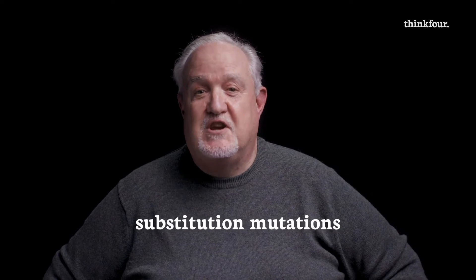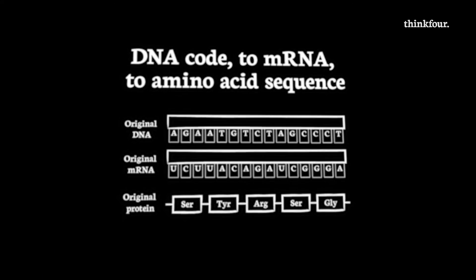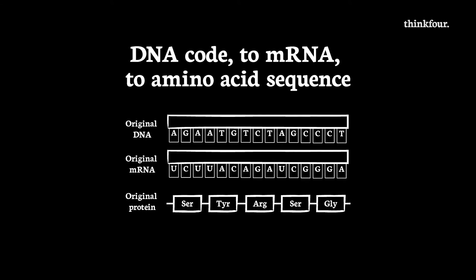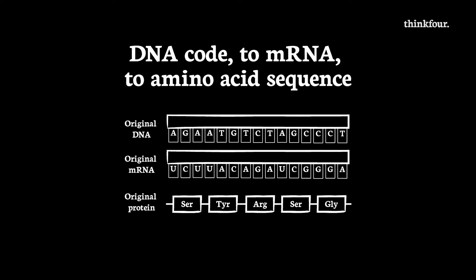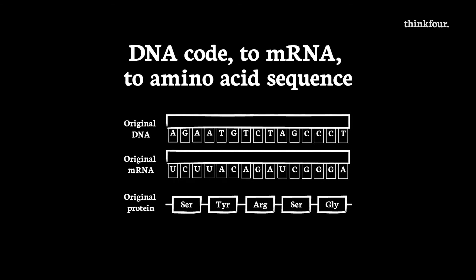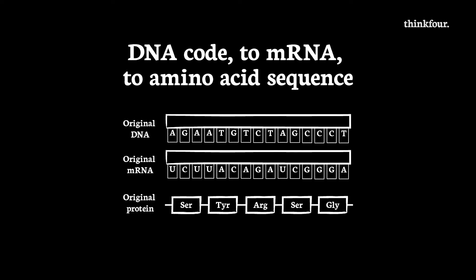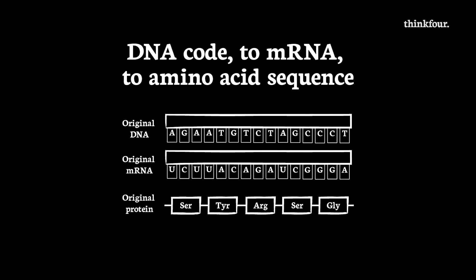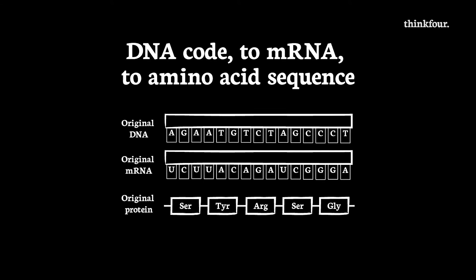First are substitution mutations. Like in a football or a hockey match, when one player is changed for another, one nucleotide is replaced by another one on the DNA. The DNA code is a series of bases, each attached to a nucleotide, and the code is copied onto the messenger RNA. This code is then used to put specific amino acids in the correct order, resulting in the production of the protein that the specific gene codes for.